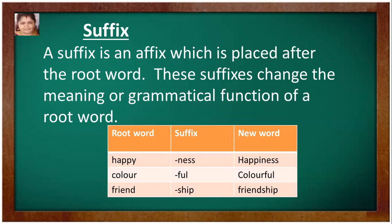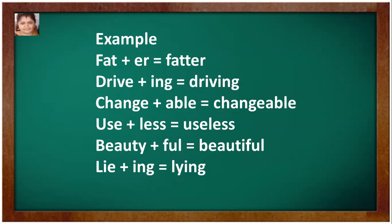If the word ends with y, you have to change the y into i and add the suffix. Examples: fat + er = fatter. Drive + ing = driving. Change + able = changeable. Use + less = useless. Beauty + ful = beautiful. Lie + ing = lying. For 'fatter,' the consonant before the vowel doubles, so F-A-T-T-E-R. For 'driving,' remove the e and add ing: D-R-I-V-I-N-G. For 'beautiful,' change y to i and add ful. For 'lying,' L-I-E + ing = L-Y-I-N-G.